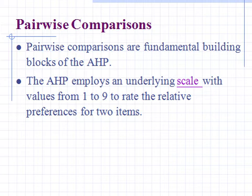If verbal judgment is extremely important, the numeric value will be 8 or 9. For very strongly more important, the numeric value will be 6 and 7. If the verbal judgment is strongly more important, the numeric value will be 4 and 5. For moderately more important, 2 and 3, and for equally important, the numeric value will be 1.